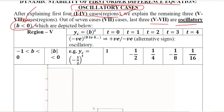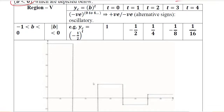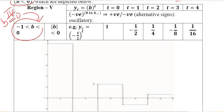We can verify this with the help of these tables. This is region number five, in which the value of b is further decreased from zero. In the last video, region four was studied where b was equal to zero. We declined b from 2 down to zero, and now it will enter the negative dimension as a negative fraction — for example, minus 0.5.